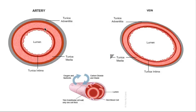We're going to focus on the artery. Arteries carry blood away from the heart. The two arteries we're going to focus on are the aorta, which carries blood out of the left side of the heart to the body cells, and the pulmonary artery, which carries blood out of the right side of the heart back to the lungs.